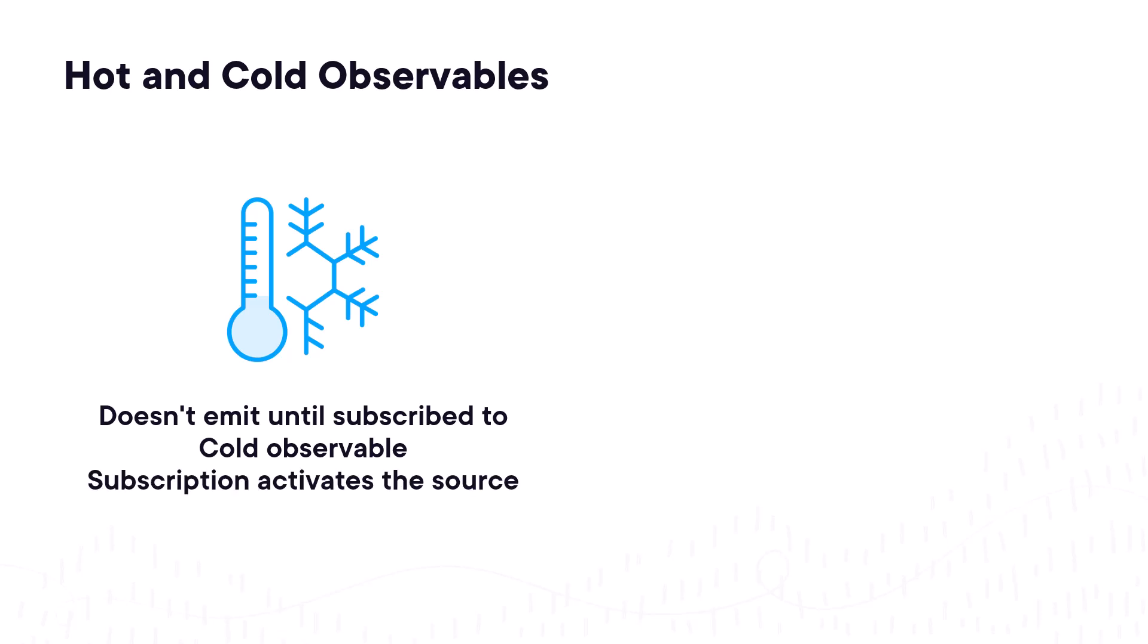This is a good time to introduce the concept of hot and cold observables. The observables we've worked with so far in this course do not emit any items until there is a subscriber. These are often called cold observables because they don't do anything but sit there in the cold waiting for a subscription. When our code subscribes to a cold observable, the observable activates the source.